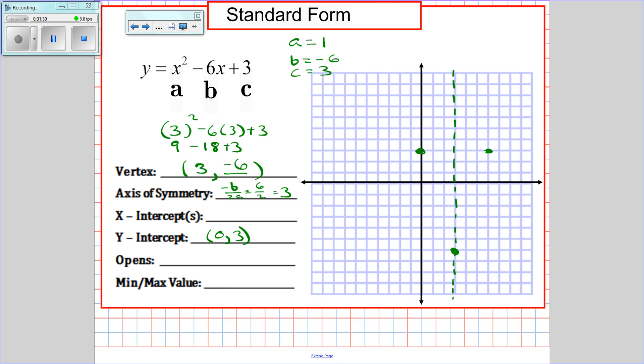I know this opens upwards because a is positive. I don't know my x-intercepts yet, I'll worry about that in just a second. My minimum value is the lowest value I have, which is negative 6.